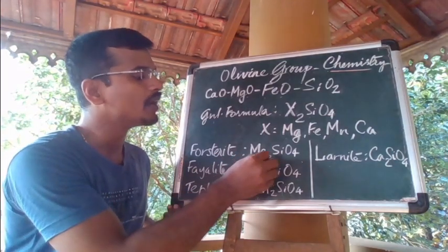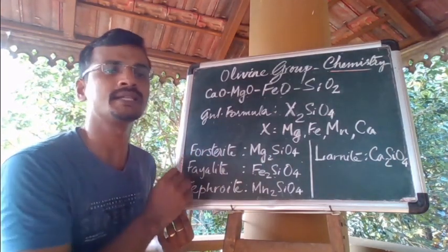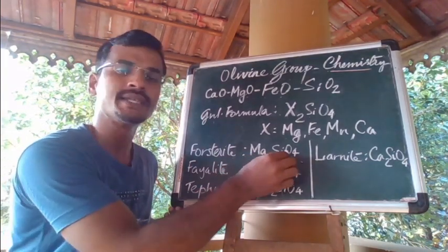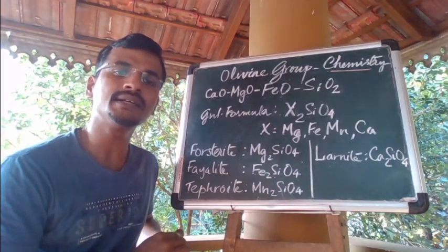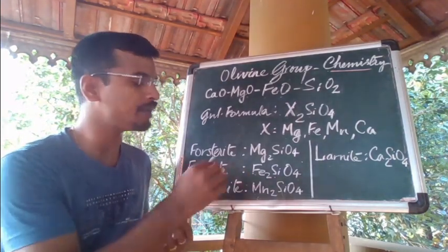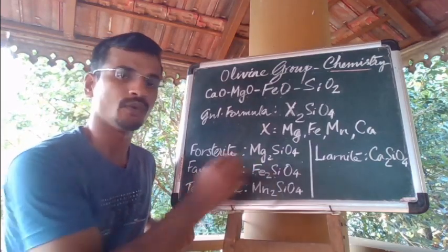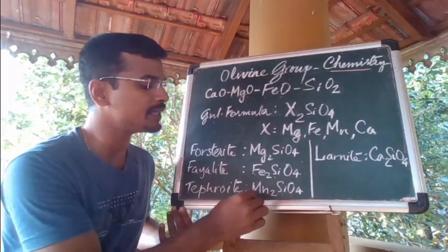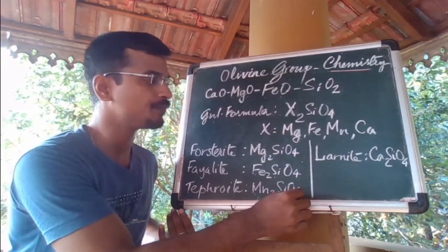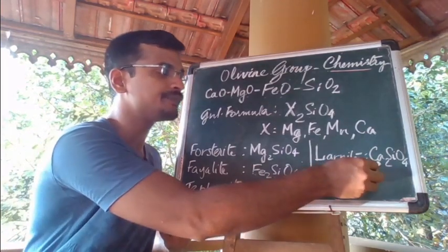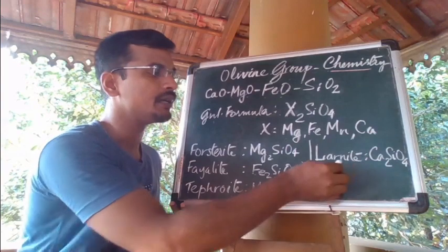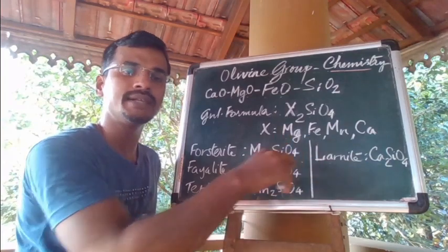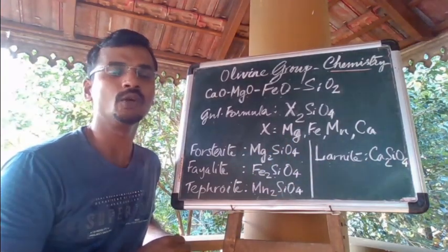If you have magnesium in the octahedral position, then we call that mineral forsterite, with the general chemical formula Mg₂SiO₄. If you have iron in the octahedral position, then you may call that mineral fayalite, Fe₂SiO₄. It is called tephroite if you have manganese in its octahedral position, so the formula becomes Mn₂SiO₄. If calcium occurs in the octahedral position, the mineral is known as larnite. Even though it does not have the olivine structure, we still consider it as one of the end-members of the olivine group of minerals.